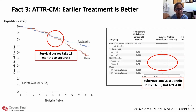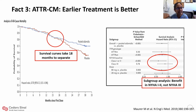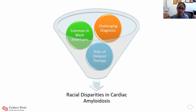With transthyretin cardiac amyloidosis, earlier treatment is better. This is a classic figure from the ATTR-ACT trial, the pivotal trial showing the benefit of tafamidis in helping patients live longer and stay out of the hospital. Tafamidis doesn't reverse disease — it prevents progression — and you have to be on it for a while to see benefit. That's why the survival curves take 18 months to separate. The earlier you start the patient on it, the better. Subgroup analysis shows the less symptomatic the patient, the more benefit — so early diagnosis is critical.